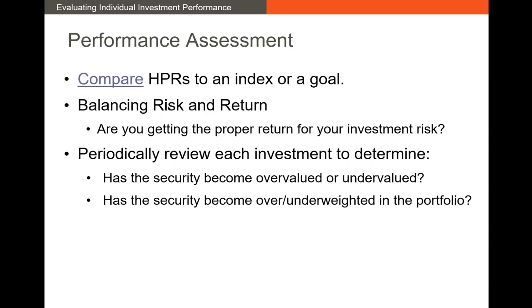We do want to make sure our portfolio is balancing risk and return. If we're not getting the appropriate return for the investment risk we're taking on — say we have a lower return for an equity portfolio and we're underperforming our benchmark — we might want to reconstitute that portfolio. We typically do this periodically, every six months or every quarter, at minimum annually. We want to see whether certain securities have become undervalued or overvalued and act accordingly.